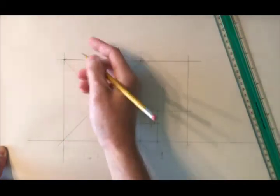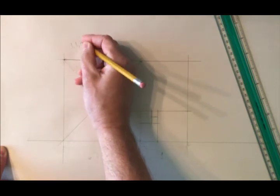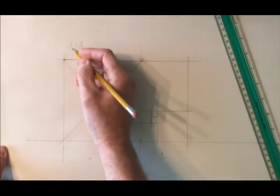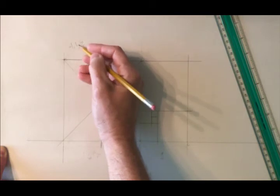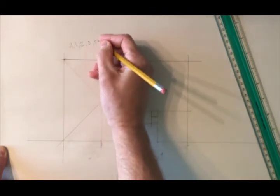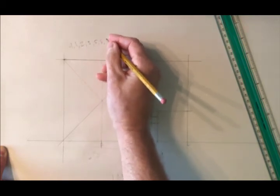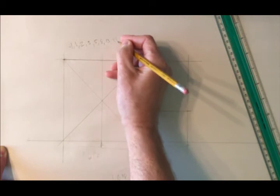The Fibonacci sequence is 1, 1, 2. So 1 plus 1 equals 2, 1 plus 2 equals 3, 2 plus 3 equals 5, 3 plus 5 equals 8, and so on.